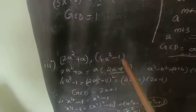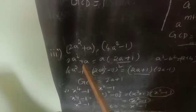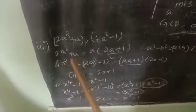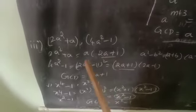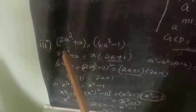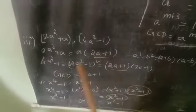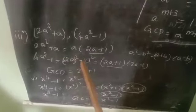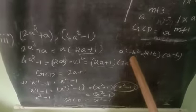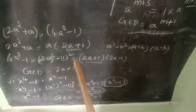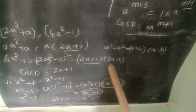Now we see the third sub-question: 2a² + a and 4a² − 1. Firstly we find out the linear factors of each term. 2a² + a — the common factor is a, so it can be written as a(2a + 1). And 4a² − 1 can be written as (2a)² − 1², and using the identity a² − b² = (a + b)(a − b), this becomes (2a + 1)(2a − 1).